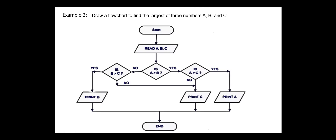Here is a flowchart to find the largest of three numbers A, B, and C. After reading the numbers A, B, and C, we check if A is greater than B; then again we check if A is greater than C — then A is the largest element, otherwise C is the largest. If A is less than B, we check if B is greater than C. If this condition is true, then B is the largest, otherwise C is the largest. So only one value — the largest — from the input A, B, C will be printed.